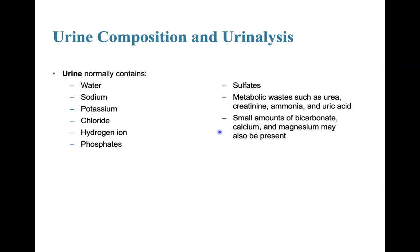Urine normally contains water, sodium, potassium, chloride, hydrogen ions, and phosphates, as well as sulfates and metabolic waste such as urea, creatinine, ammonia, and uric acid. Remember that urea cycles back and forth so that most of the urea is excreted from the body. Small amounts of bicarbonate, calcium, and magnesium may also be present.